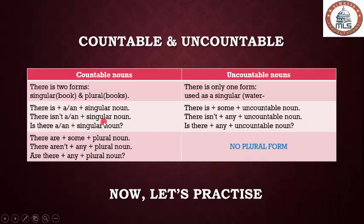For uncountable nouns, we use 'there is' plus 'some' plus uncountable noun — for example, 'there is some water,' 'there is some milk,' 'there is some rice.' Negative form: 'there isn't any' plus uncountable noun — 'there isn't any water,' 'any milk.'